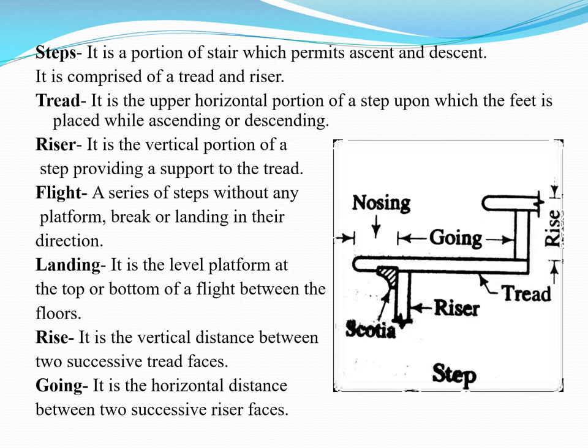The tread is the horizontal portion of your step — that area on which you put your foot. The riser is the vertical portion that provides the height to your step as well as support to your tread. A flight is the number of steps that lead you in one direction only — a series of steps without any landing, platform, or change of direction.